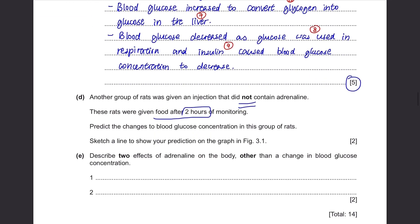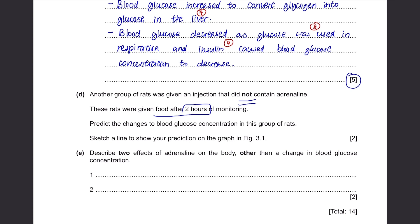Part E. Describe the effects of adrenaline on the body other than a change in blood glucose concentration. Adrenaline makes your body think you are in an emergency situation — think about how you feel right before a presentation or competition. With a rush of adrenaline, your breathing rate will increase, your heart rate will increase, your blood pressure will increase, and your pupils will be dilated.